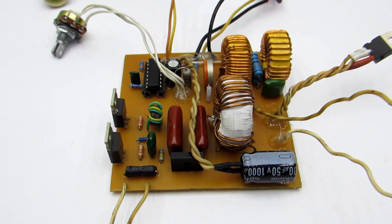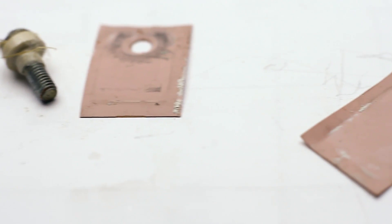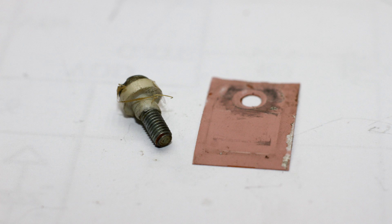After final assembly, the transistors are set on the radiator through heat conductive and insulating gaskets in order to avoid short circuit.